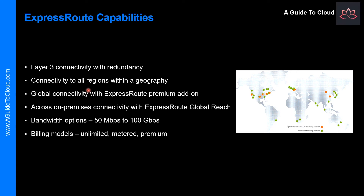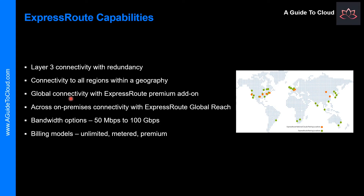Another benefit is connectivity to Microsoft Cloud services and geographical locations. ExpressRoute connections enable access to lots of Microsoft services, including Azure, Office 365 services, and Dynamics 365. Office 365 was created to be accessed securely and reliably via the internet, so ExpressRoute requires Microsoft authorization. Another benefit is global connectivity with the ExpressRoute premium add-on, which lets you extend connectivity across geopolitical boundaries.